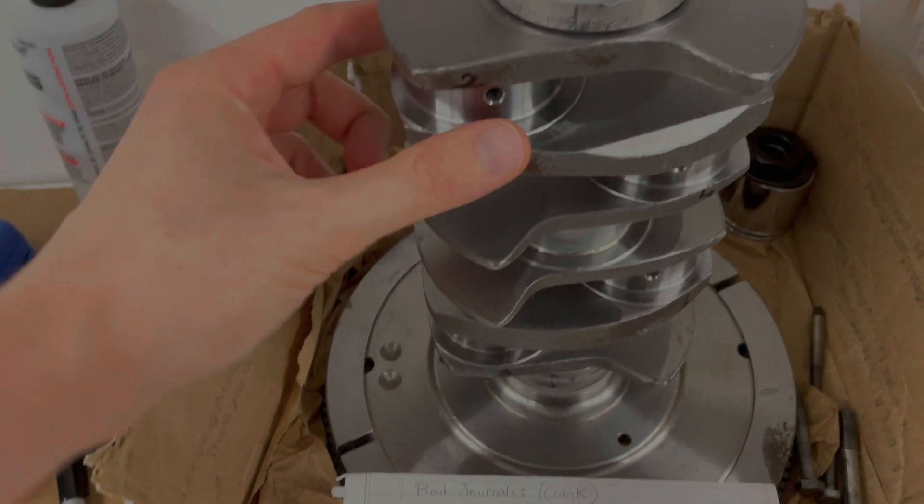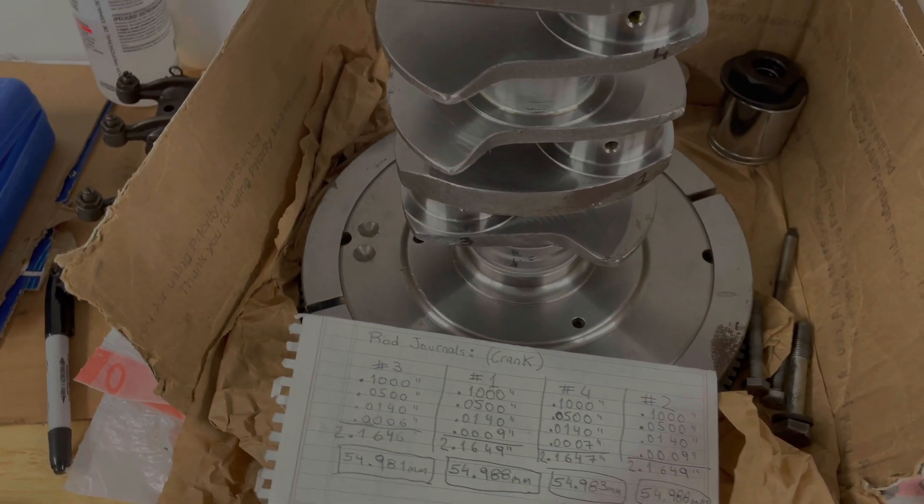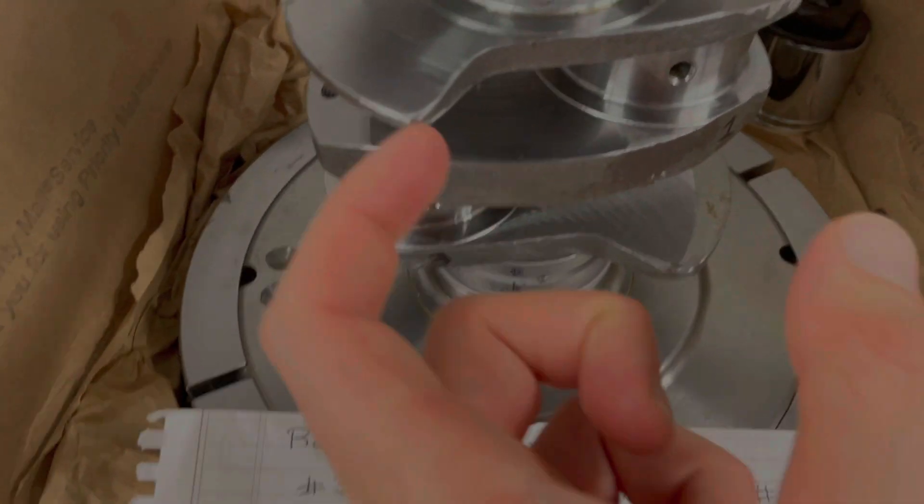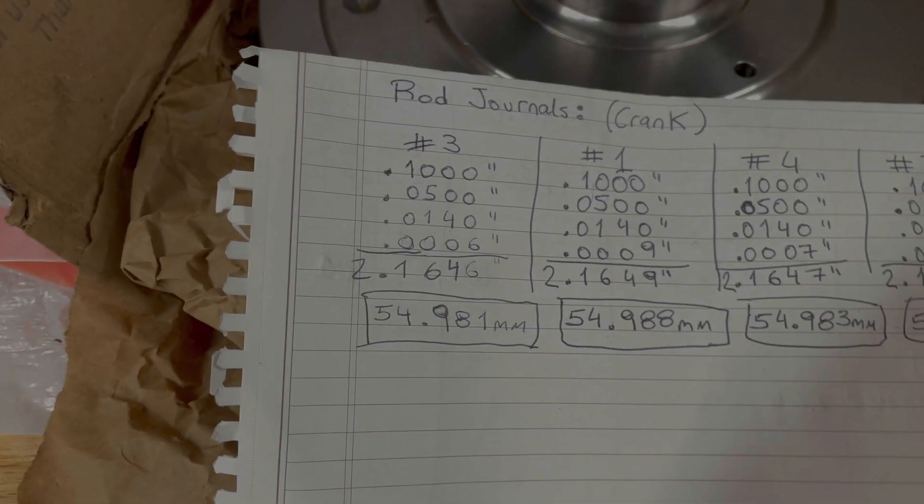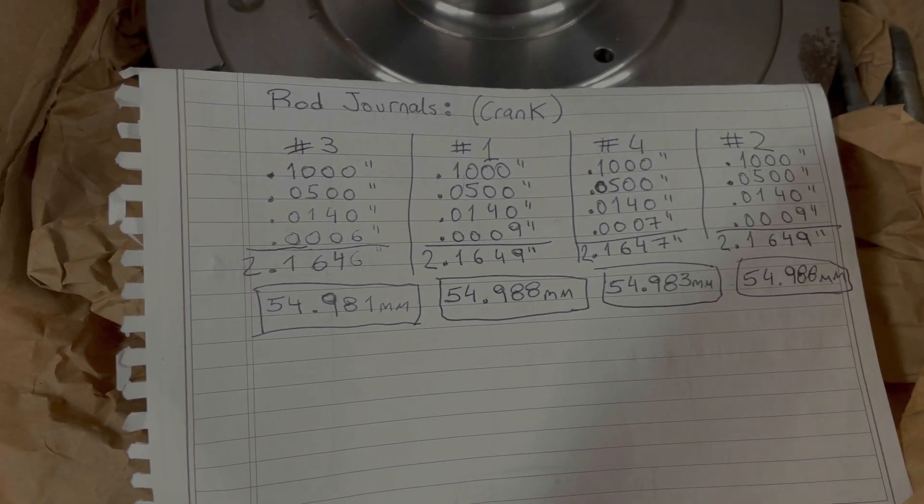The rods move around a lot; I don't think plastic gauge is accurate. So I got a micrometer to measure the outside diameter of each journal. I wrote the number on each one just to remember and took the measurements on a piece of paper.